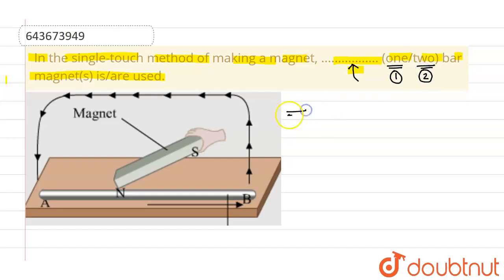Now as you can see in this particular diagram, we are making magnet with single touch method. In this we are using a single bar magnet, we are using one bar magnet. So this is the bar magnet.